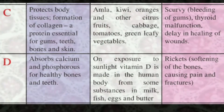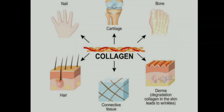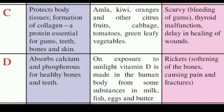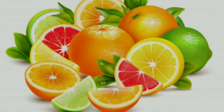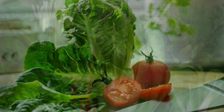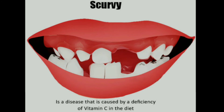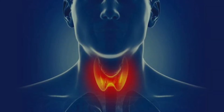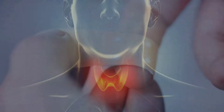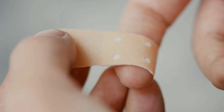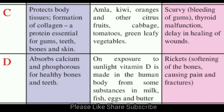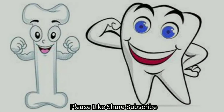Vitamin C protects body tissues and aids in the formation of collagen, a protein essential for gums, teeth, bones, and skin. Sources: amla, kiwi, oranges and other citrus fruits, cabbage, tomatoes, green leafy vegetables. Deficiency diseases: scurvy — that is, bleeding of gums — thyroid malfunction, and delay in healing of wounds.